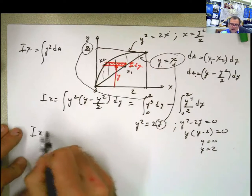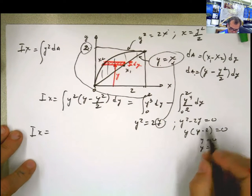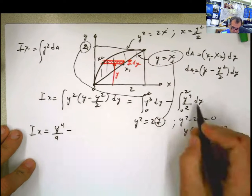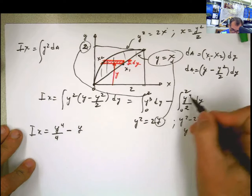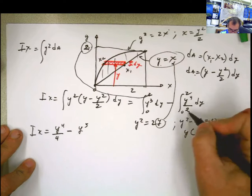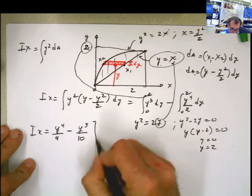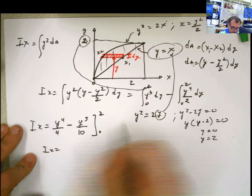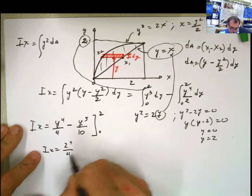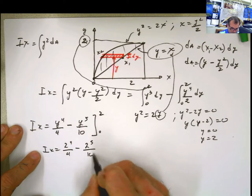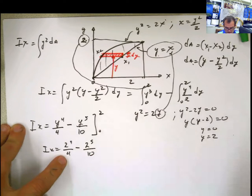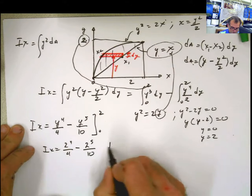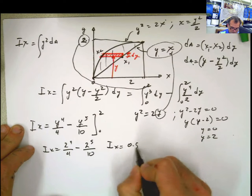So Ix is going to be equal to y to the 4th divided by 4 minus y to the 5th divided by 5 times 2, which is 10, from 0 to 2. Solve the problem. This is 2 to the 4th divided by 4 minus 2 to the 5th divided by 10. This is 16 divided by 4 is 4. This is 32 divided by 10 is 3.2. 4 minus 3.2, Ix equals 0.8. What units?